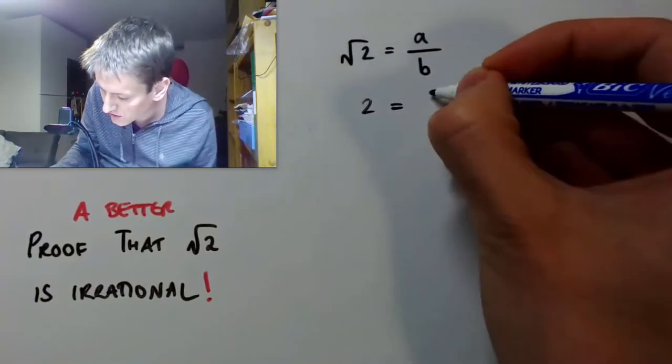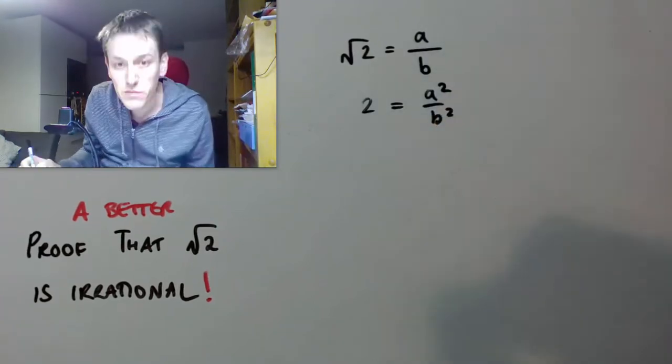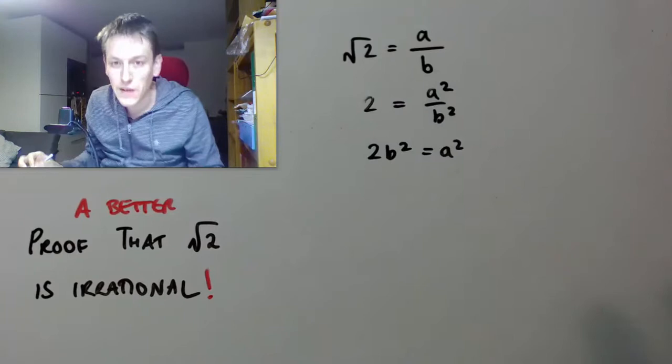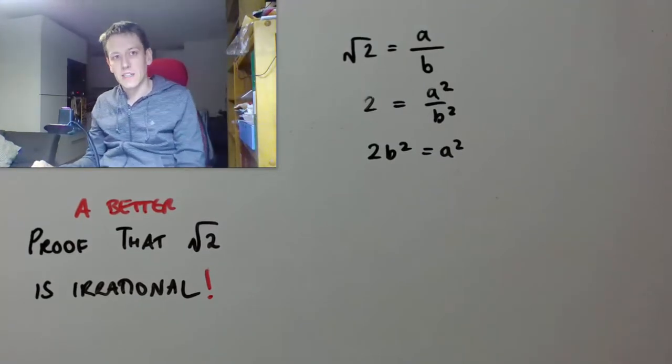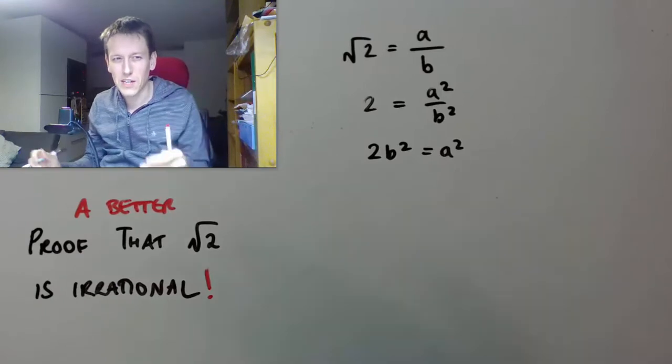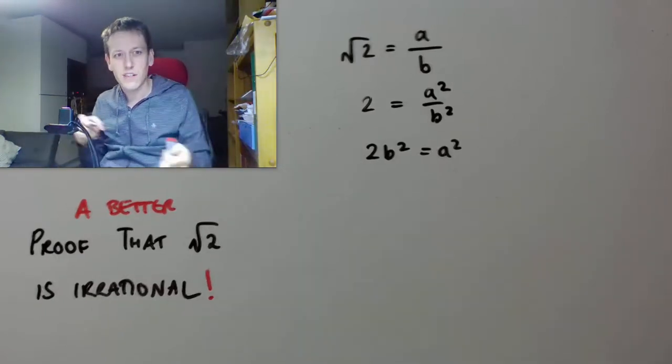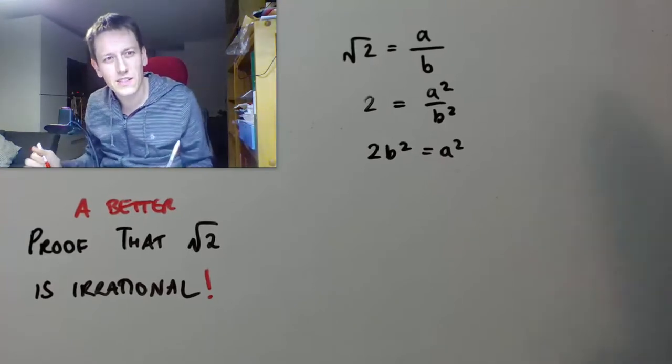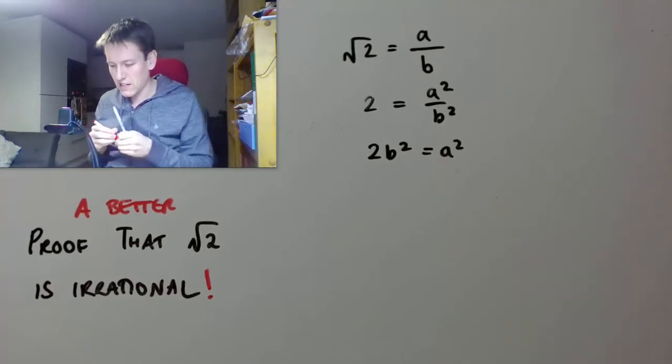Okay, so we square both sides, and we get that 2 equals a squared over b squared, and multiply through by b squared, to get 2 times b squared equals a squared. And this is where the standard proof starts saying all sorts of things about a and b can't be co-prime, and it's just, it's not wrong, it's a perfectly good proof, it's just, somehow, it diverts us from the main point, and here it is.